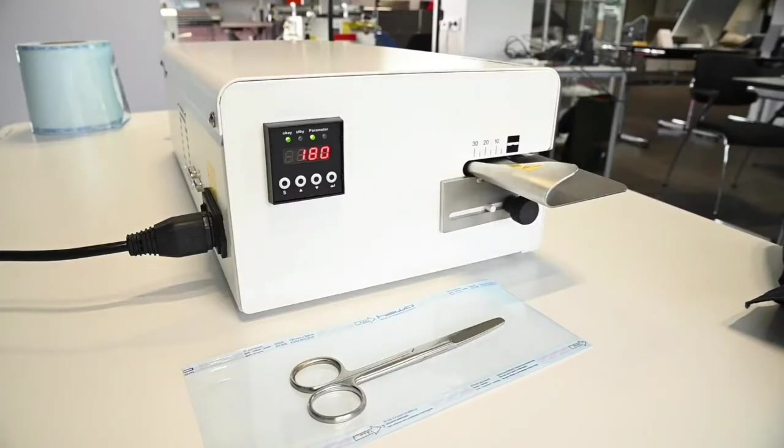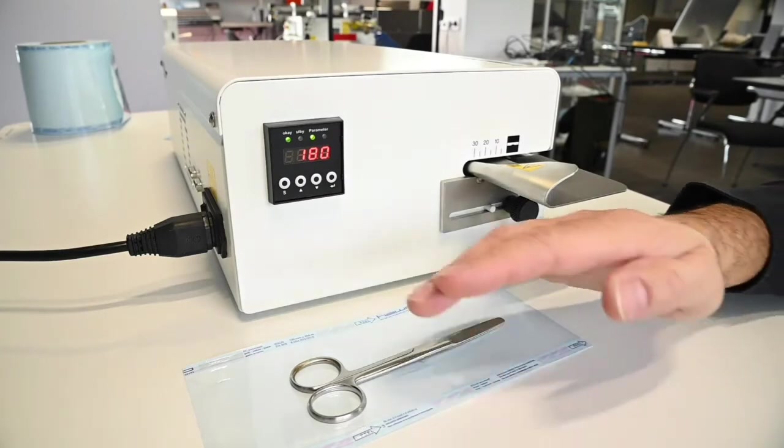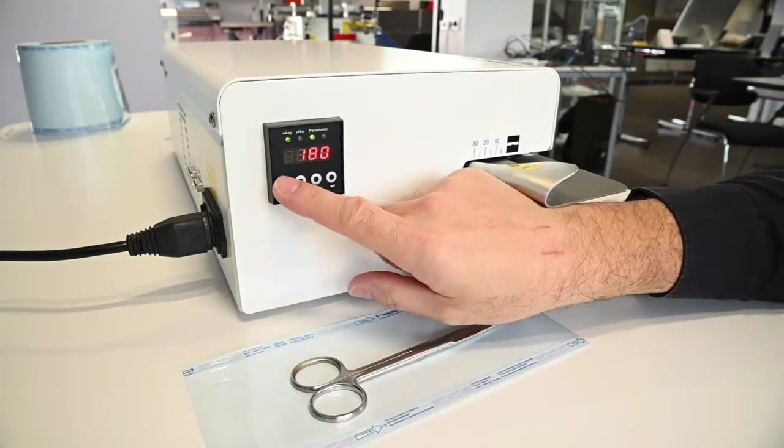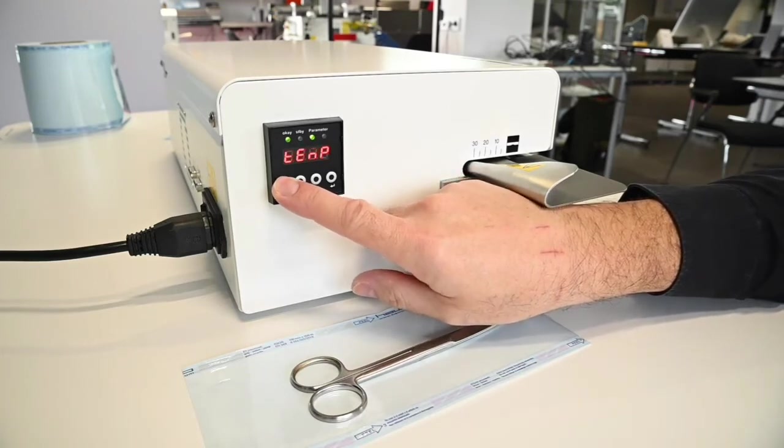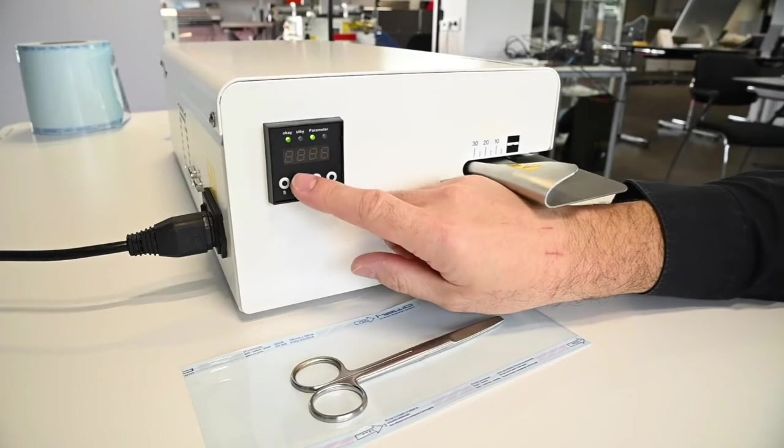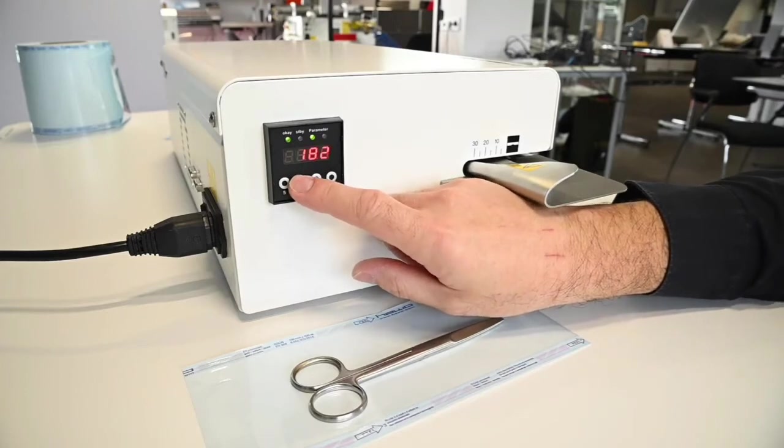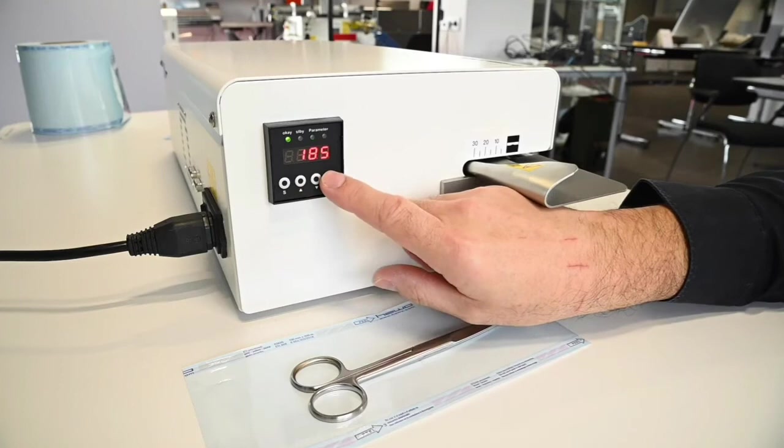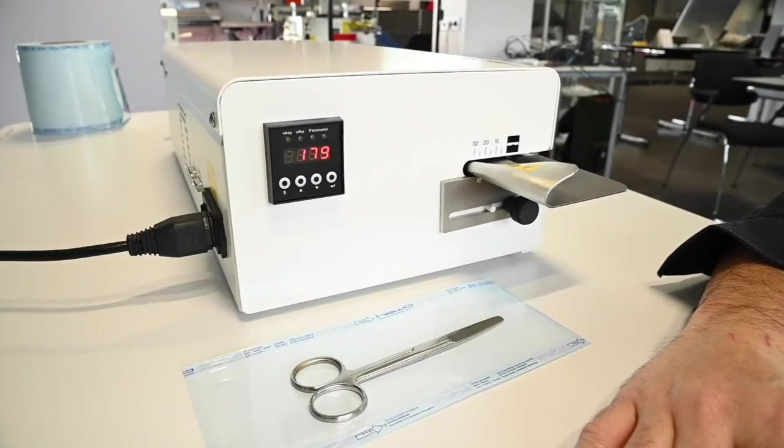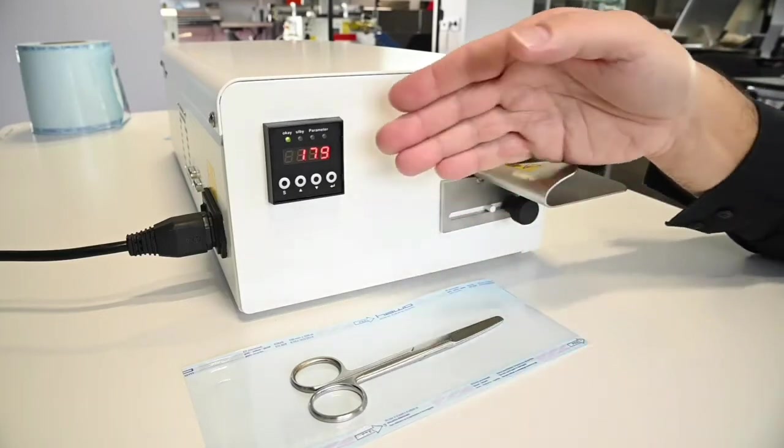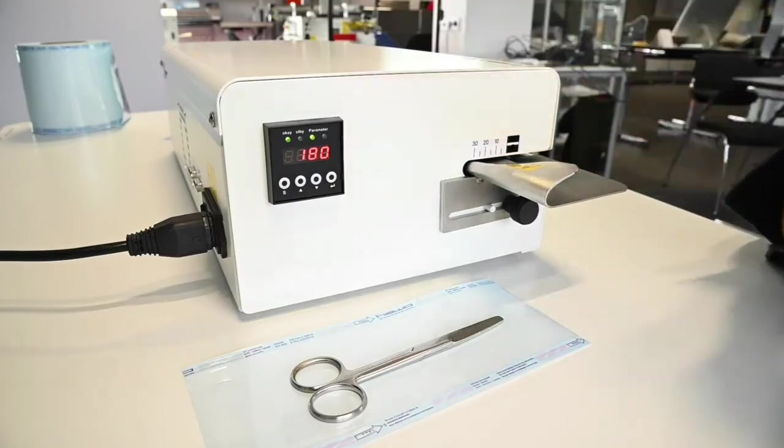Sealing temperature can be adapted easily and intuitively to the required value for the sterile barrier system at hand. In our example we'll be using 185 degrees centigrade. After the value has been confirmed, the machine heats up automatically to the new nominal value.